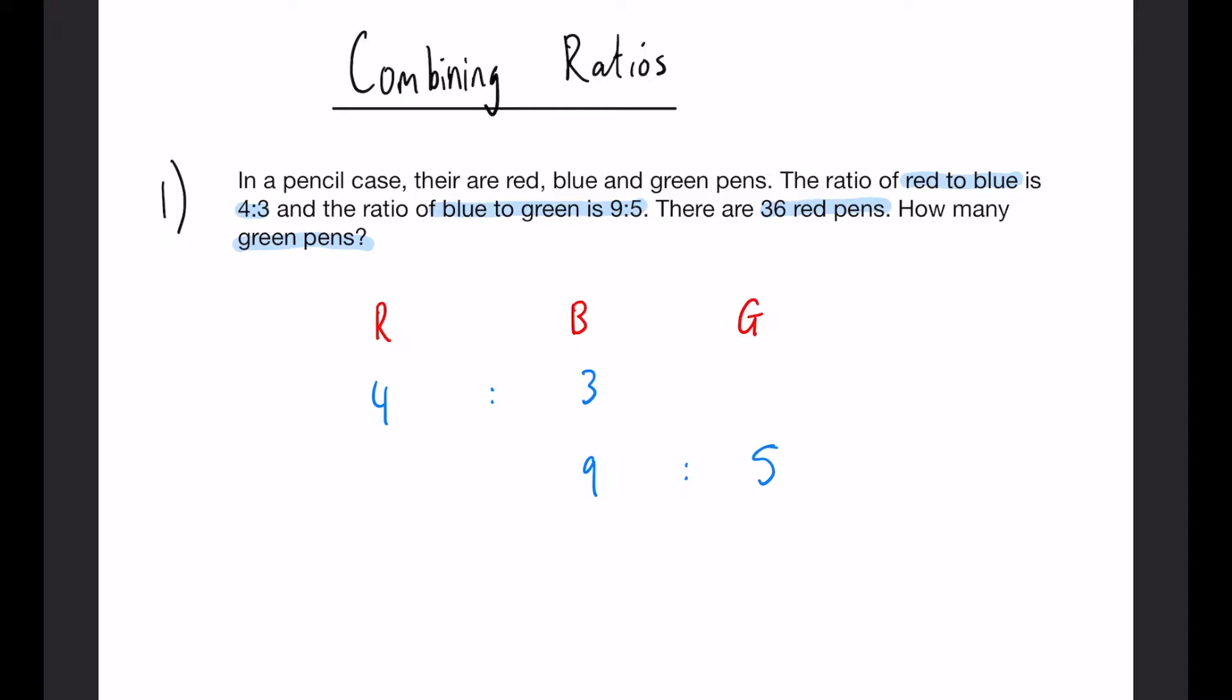Now if you have a look at what we know, we know there are 36 red pens. However, this doesn't really help us because the thing we want to work out is this value here and they're not connected at the moment. So there's a very simple step we can do.